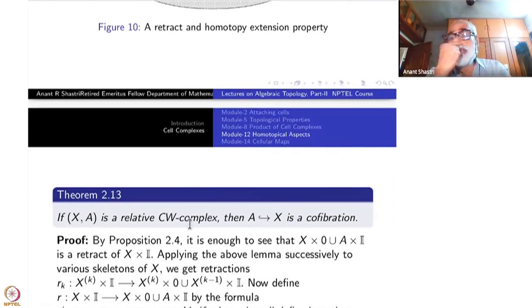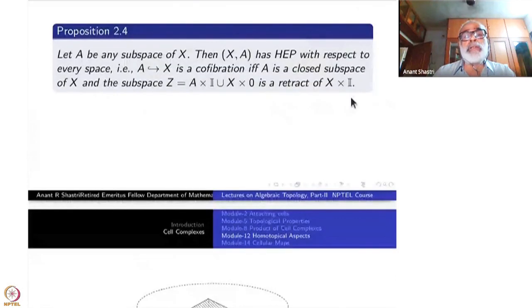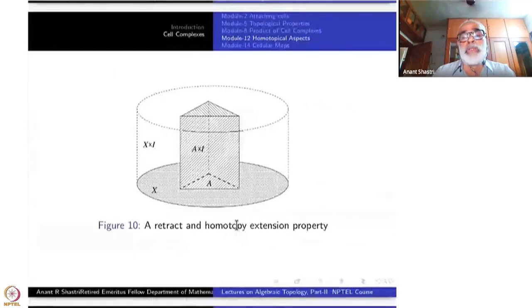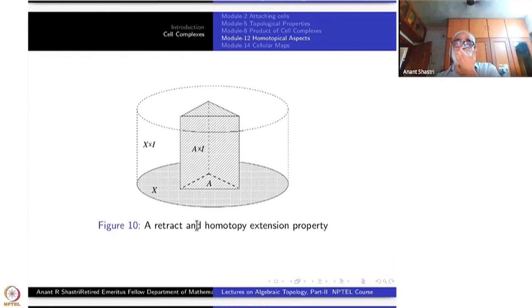What we're going to do is show that if (X,A) is a relative CW complex, then the inclusion map is a co-fibration. All I'm going to prove is that X×0 ∪ A×I is a strong deformation retract - actually just a retract - of X×I. In practice, whenever we have constructed it as a strong deformation retract, this retract is enough.